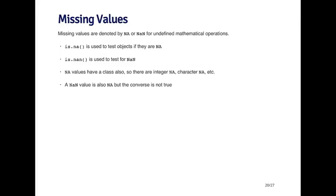Missing values in R are denoted by either NA or NaN. NaN is used for undefined mathematical operations, and NA is used for pretty much everything else. There's a function called is.NA which tests objects to see if they are missing values, and another function called is.NaN which tests for NaNs. NA values can have a class too — you can have missing integer, character, or numeric values.